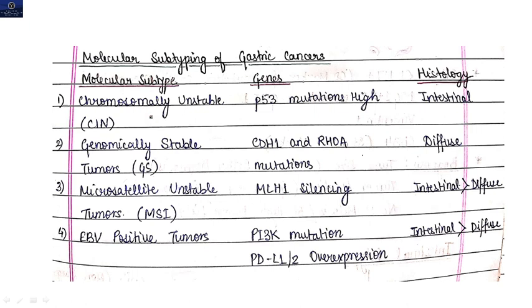Now coming to the molecular subtyping of gastric cancers. The first is chromosomally unstable. The gene which is involved is p53 - p53 mutation is high. And histology will be intestinal type if p53 gene is mutated, histology will be mostly intestinal type.